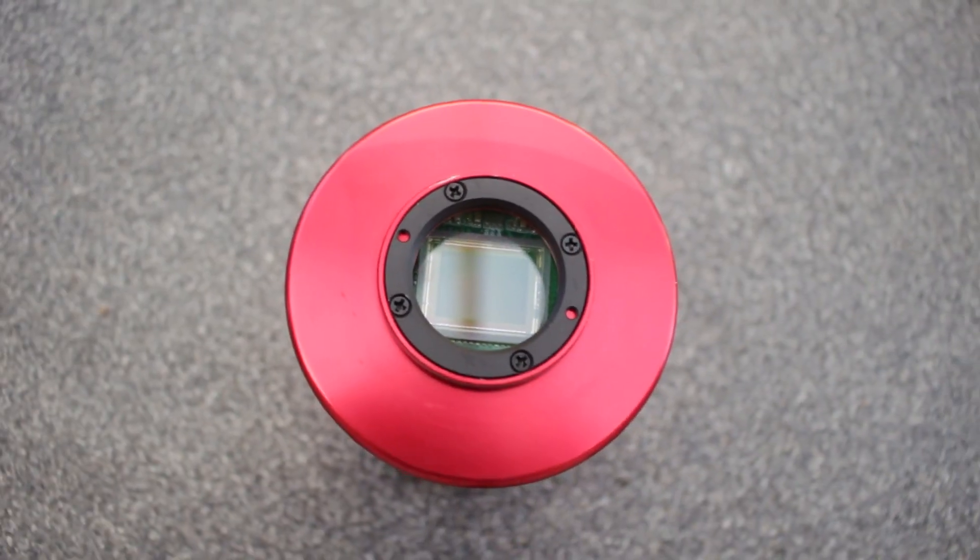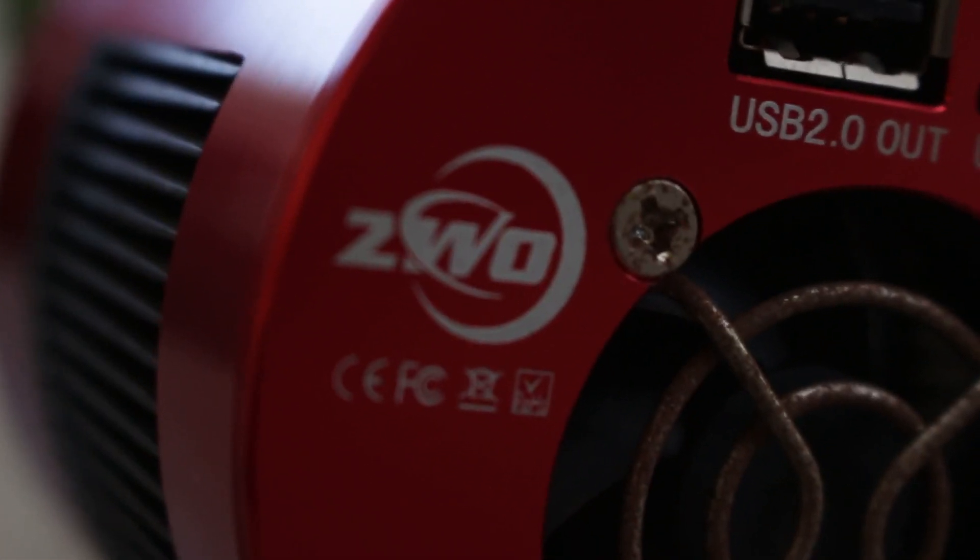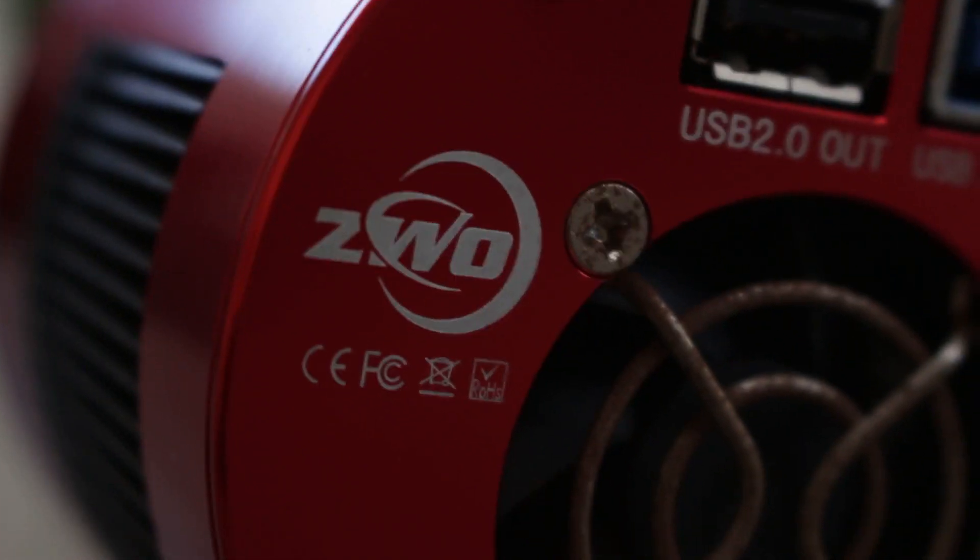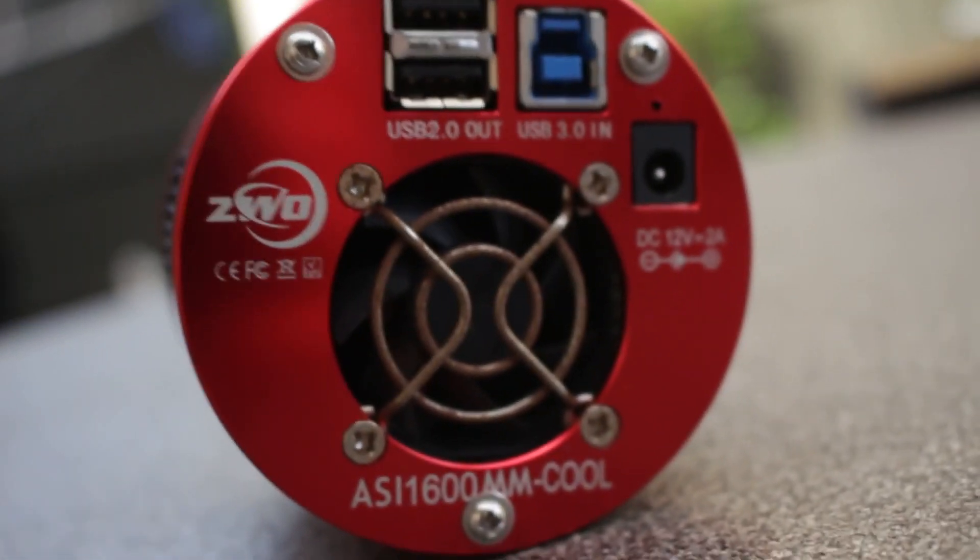CMOS, on the other hand, the sensors that ZWO introduced to us, are the new and improved sensors. These are the sensors found in smartphones and newer DSLRs that absolutely smoke CCDs in terms of sensitivity.